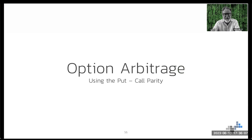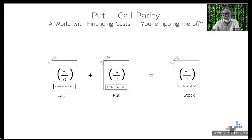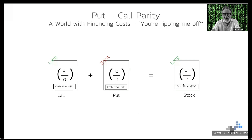We're using the put-call parity for option arbitrage, and it shows you how we can produce profits with no risk at all, if the condition of the pricing is favorable for these kinds of trades. To repeat what we already did in session one and session two, on the screen we have a long call and a short put, which is equivalent to owning a stock, underlying a currency, a commodity — you name it.